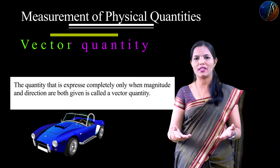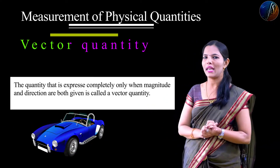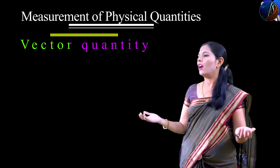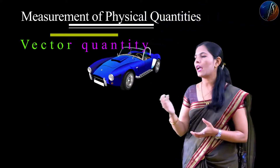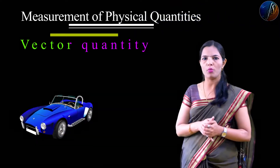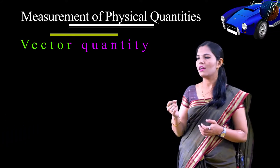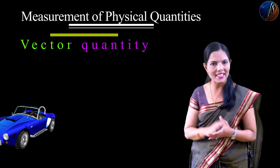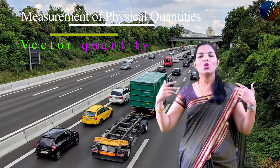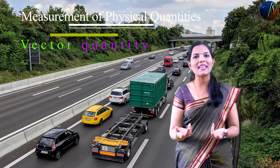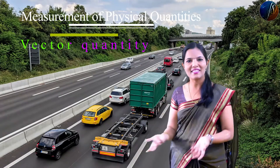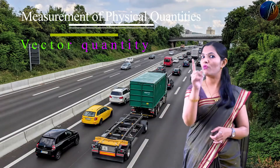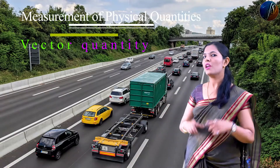For example, you are going to Mumbai and you drive the car at a speed of 90 km per hour. It is 90 km speed. But that speed also has a direction — that's why velocity is a vector quantity.